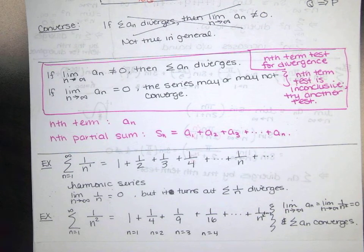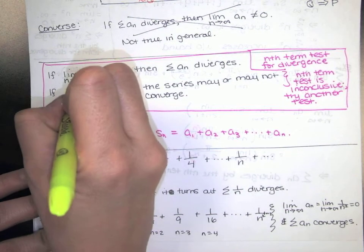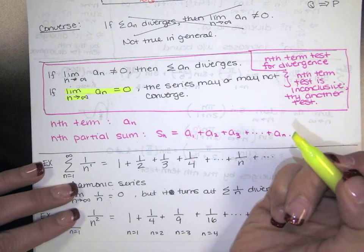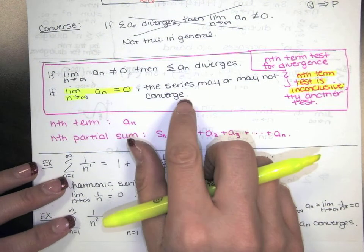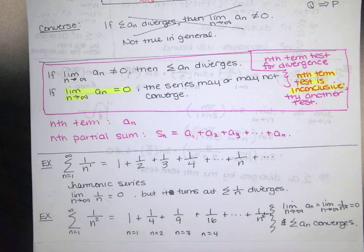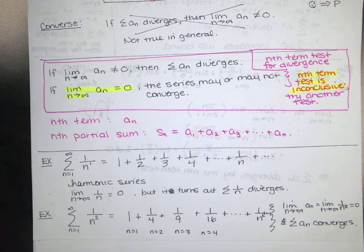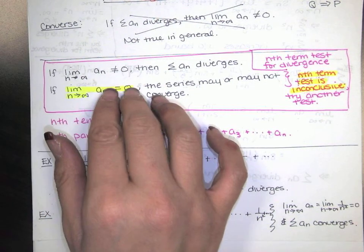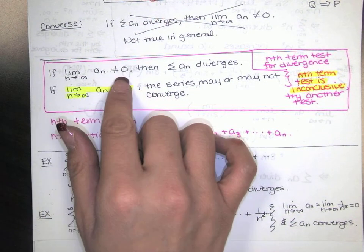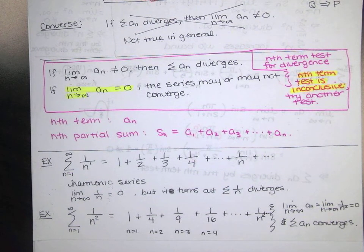So here's your takeaway. If the limit as n goes to infinity of a sub n equals 0, the test is inconclusive — the series may converge or it may not. If you look at a series and you suspect the nth term approaches something that's not 0, go ahead and compute the limit. Show that it's not 0. If the limit is not 0, you automatically get that the series diverges. That's why we call this the nth term test for divergence.